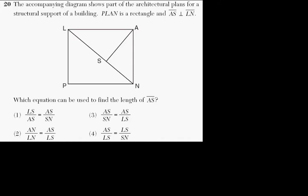The accompanying diagram shows part of the architectural plans for a structural support of a building. PLAN, isn't that clever, is a rectangle and AS is perpendicular to LN. In other words we have this rectangle PLAN, that means four right angles and LA is parallel to PN and AN is parallel to LP. And we also have AS is perpendicular to LN, so this segment AS here is perpendicular to LN, this segment right here.